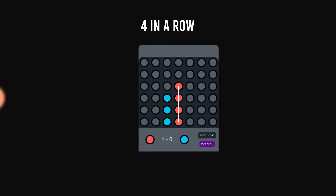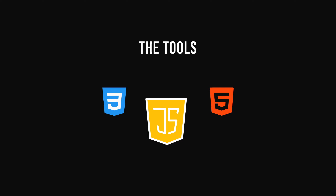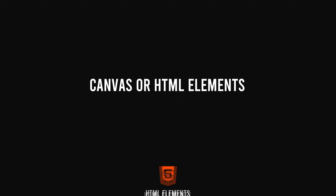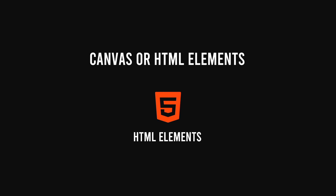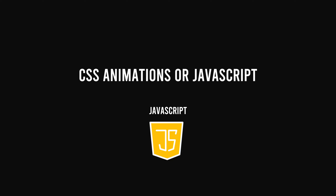Hi everyone, today we're going to build the Four in a Row game, also known as Connect Four. Before we start, I have some questions for you to answer in the comments. First: what tools would you use? I'll use CSS, HTML, and JavaScript. Second: would you use canvas or HTML elements to render components? I'll use HTML elements. Third: CSS animations or JavaScript to move things around? I'll use JavaScript. Now let's see the demo of our final product.